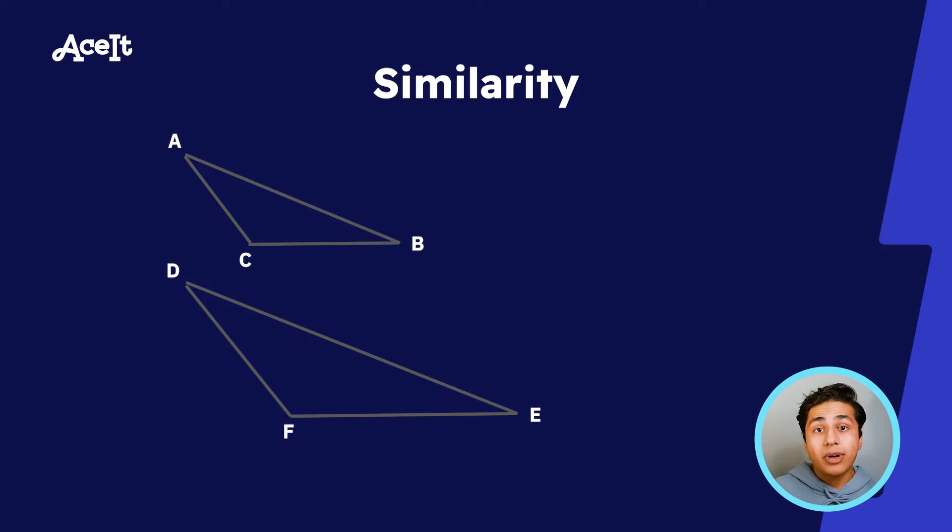The first main topic I wanted to cover today is that of similarity. These are for the SAT math problems that tell you two triangles are similar. Similar triangles are triangles that have the same interior angles but they have different side lengths.